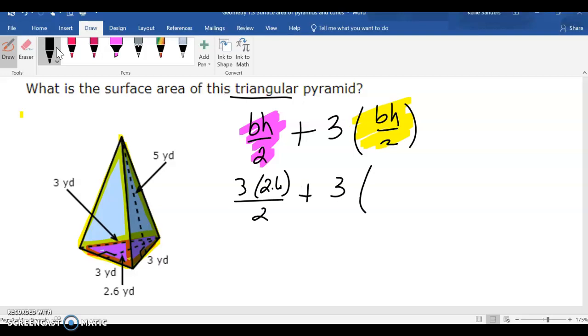The yellow triangle's base is 3. The height is 5, and we're going to divide that by 2 and then multiply by 3 because we have 3 of them. So, 2.6 divided by 2.